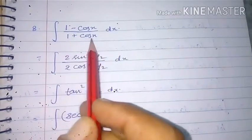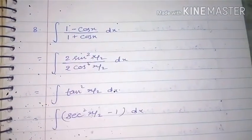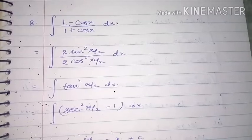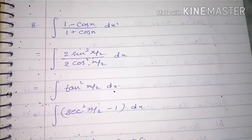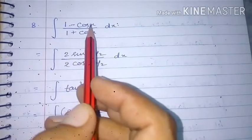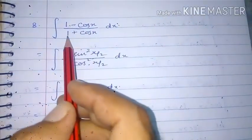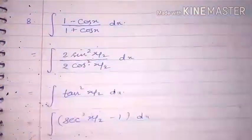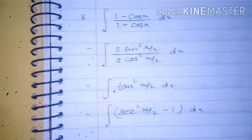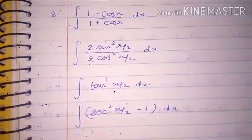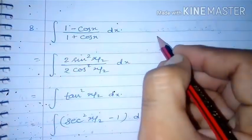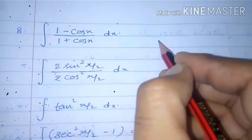Jab tak denominator mein single term nahi ban jayegi tab tak hum ise integrate nahi kar sakte. To integrate karne ke liye, sabse pehle hum trigonometric identities use karenge, kyunki agar hum trigonometric identity use karte hain to hum denominator ke andar aasani se single term bana sakte hain. To start karte hain — 1 - cosx ke liye trigonometric formula hamare paas mein hai.